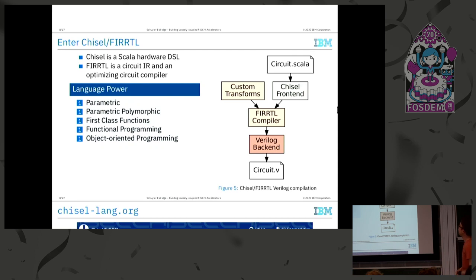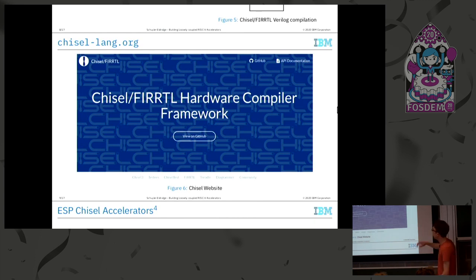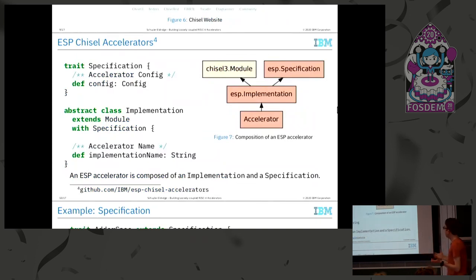What does this process then actually look like? You write your circuit in Chisel, that runs through the Chisel front end, that generates FIRRTL IR, that runs through the FIRRTL compiler, that generates a lowered form of FIRRTL IR, and then that runs through a Verilog back end and you get Verilog out of it. You can customize this whole process with custom transforms that you inject into really any stage of this process. There's a whole website on this - chisel-lang.org. It's an open source project, check it out.